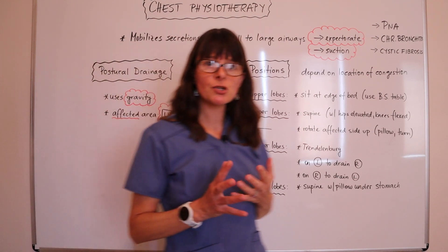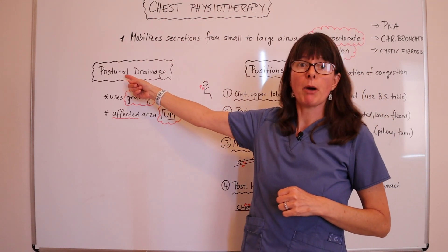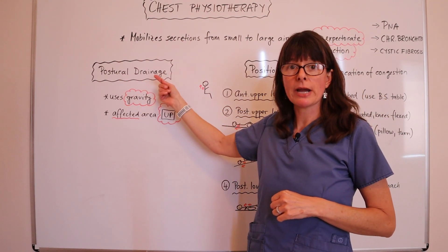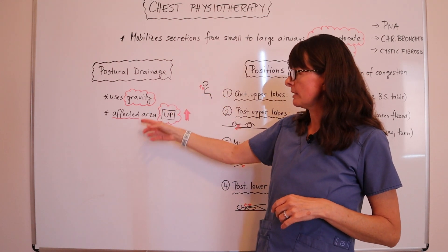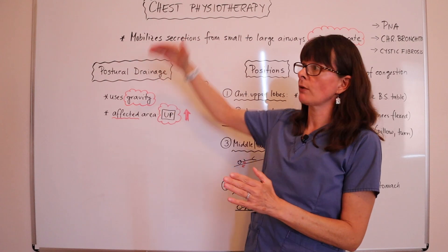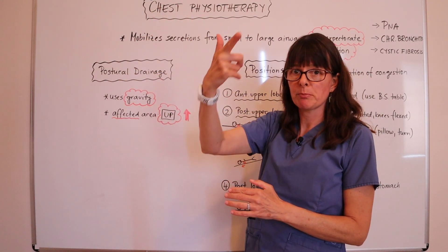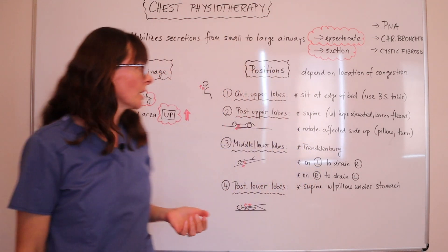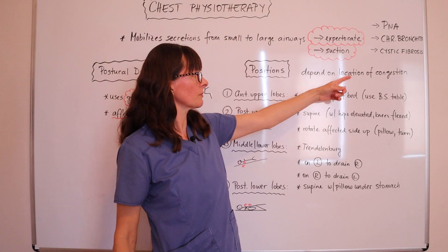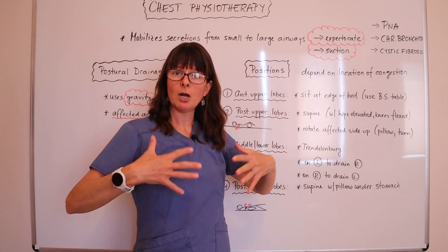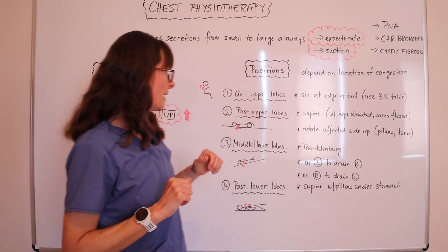Postural drainage means that we use gravity to put the patient in a certain posture that will allow drainage of these secretions. When we think about using gravity, we have to put the affected area up so that secretions can move down and the patient can expectorate them. The positions depend on the location of the congestion — we have the upper, middle, and lower lobes of the lungs, both anterior and posterior.